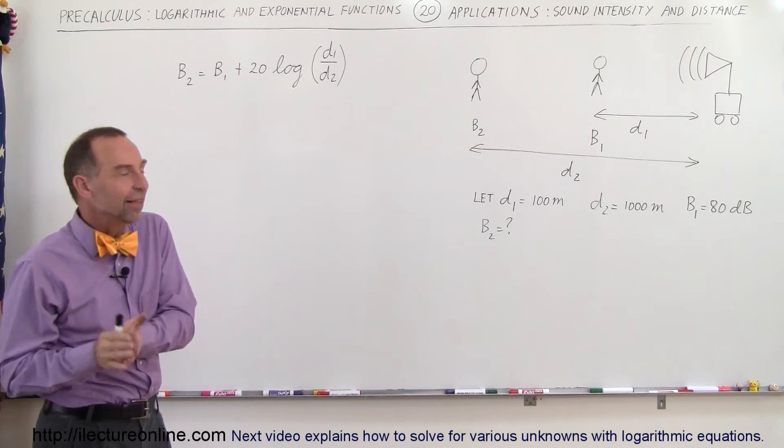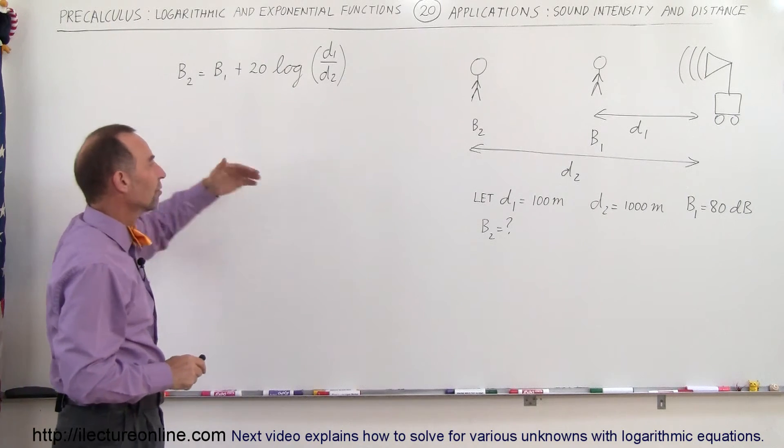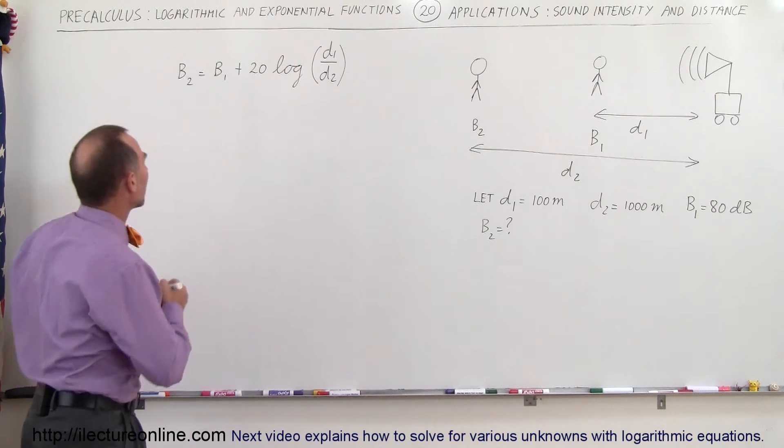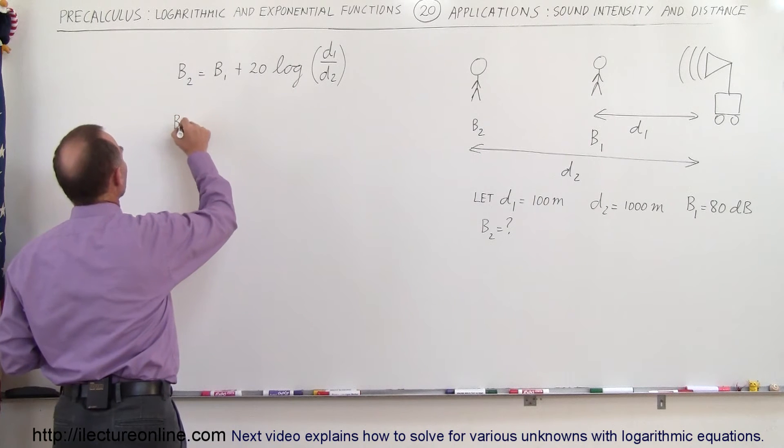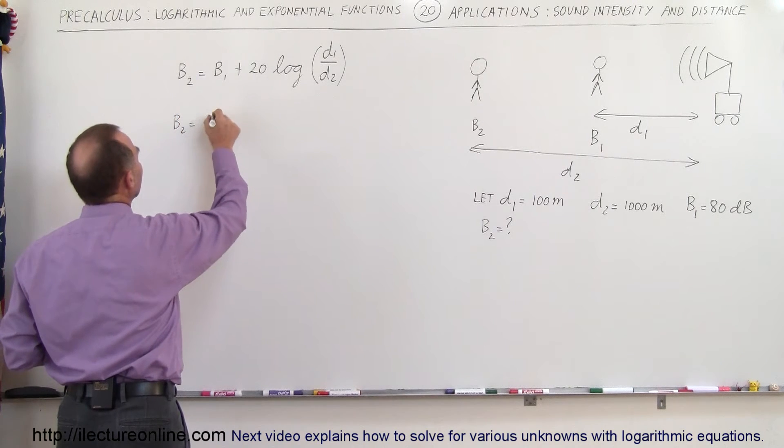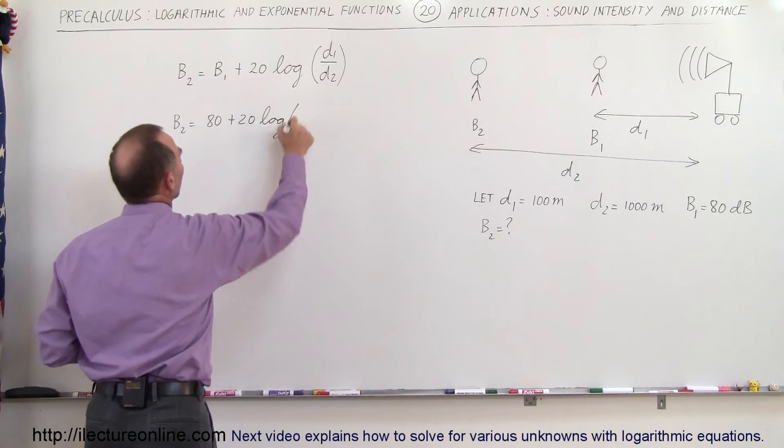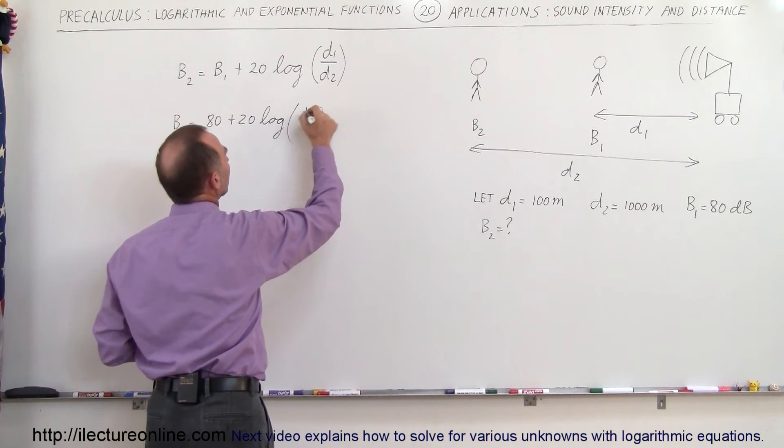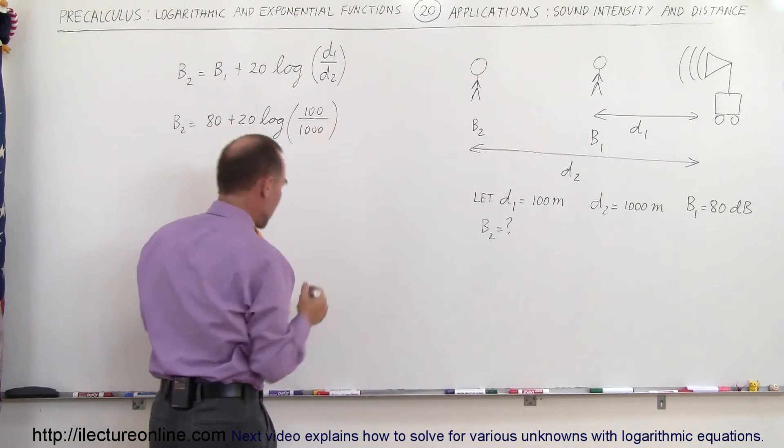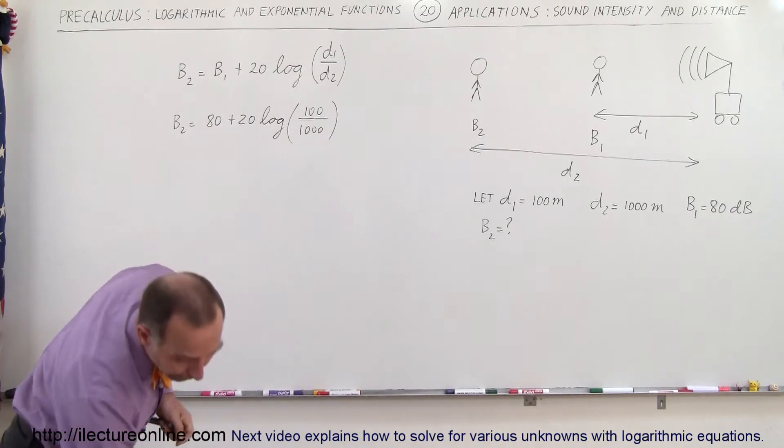So let's go find out what the sound intensity will be for the second person being a thousand meters away. Alright, so b2 is equal to b1 which is 80 decibels plus 20 times the log of that ratio. Now d1 is a hundred meters and d2 is a thousand meters, so that would be 1 over a thousand or 0.1.